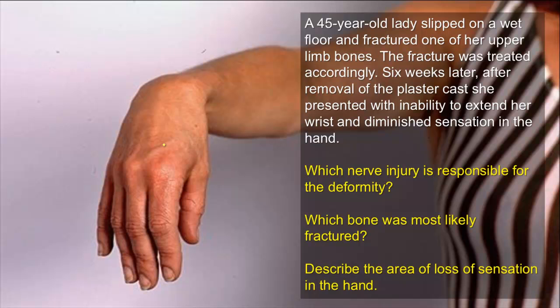A 45-year-old lady slipped on a wet floor and fractured one of her upper limb bones. The fracture was treated accordingly. Six weeks later, after removal of the plaster cast, she presented with inability to extend her wrist and diminished sensation in the hand. Which nerve injury is responsible for the deformity, which bone was most likely fractured, and describe the area of loss of sensation in the hand?